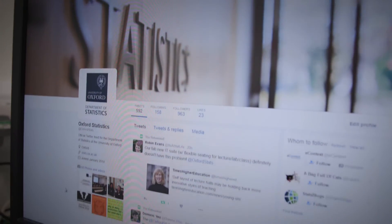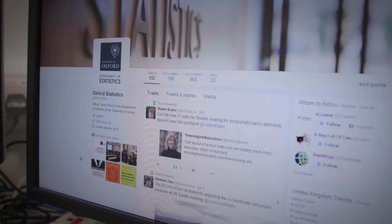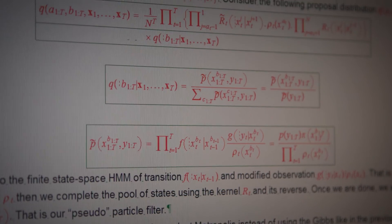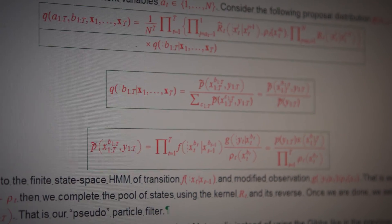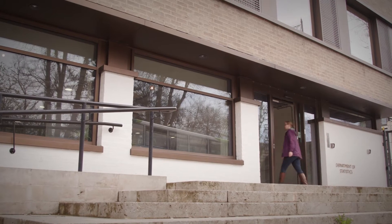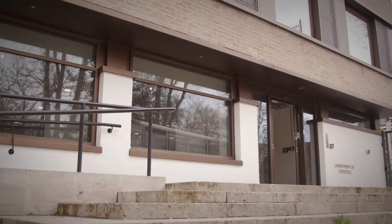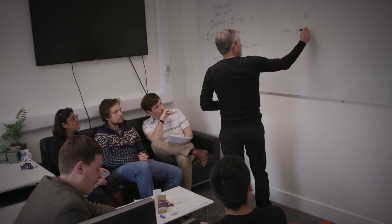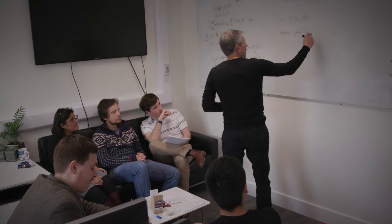From road networks to social networks, from discovering the causes of illness to modelling the spread of infectious disease and studying the genetic variation in humans and populations of animal species in the wild, statistics is vital in every area of modern life. Researchers at the University of Oxford's Department of Statistics are tackling complex problems in genetics, bioinformatics and machine learning to contribute to our understanding of the world around us.